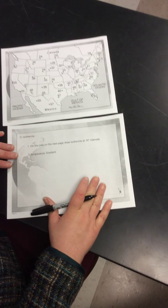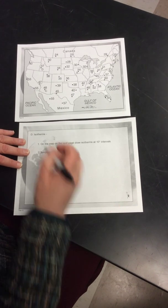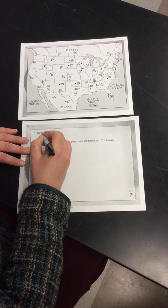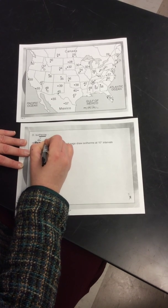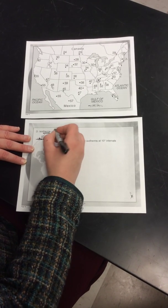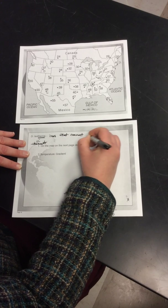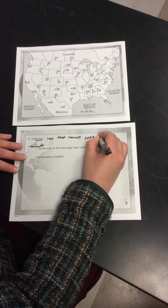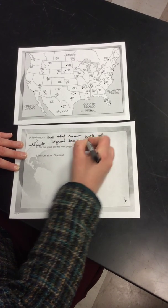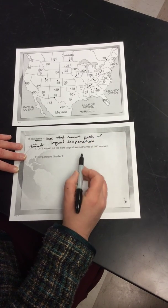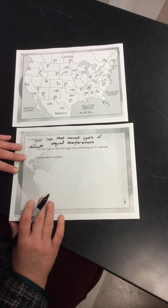Isotherms are very similar to what we talked about earlier in the year with topographic maps and contour lines. The term isotherm - the therm part refers to thermometer, which measures temperature. Isotherms are lines that connect points of equal temperature. When we did topographic maps we were connecting points of equal elevation. So isotherms connect the same temperature.